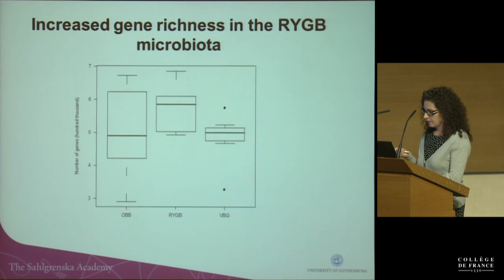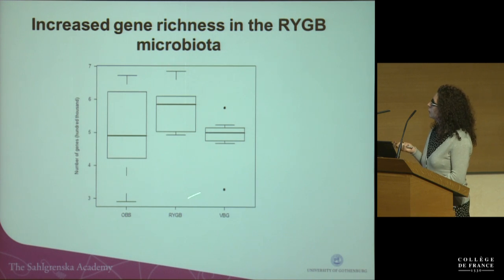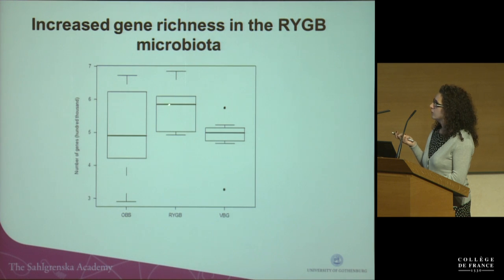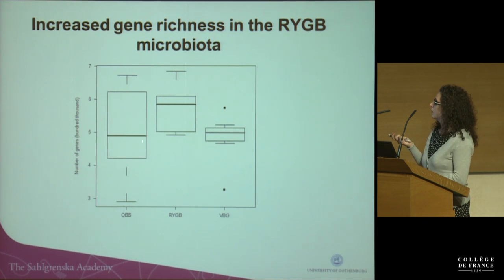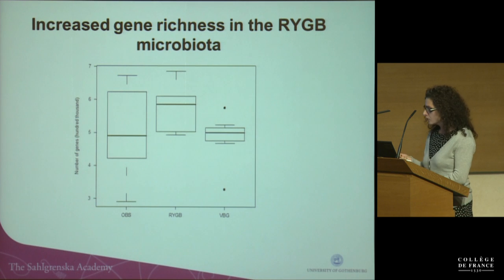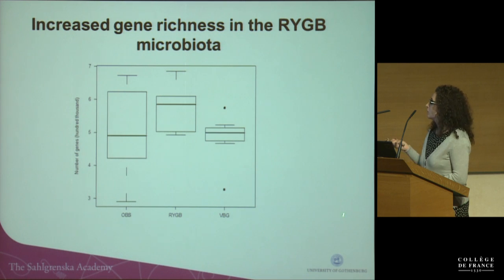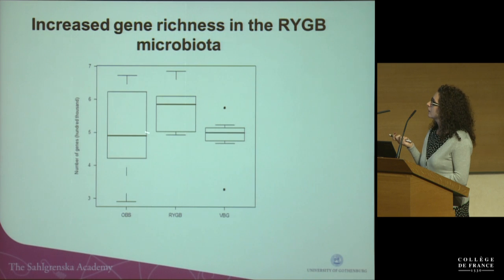In contrast, Roux-en-Y microbes were mostly using sugars, short-chain fatty acids, and phosphoglycerate for energy. Another difference was gene richness: all subjects in the Roux-en-Y group were above the recently established high gene count threshold, while VBG subjects were around the threshold. Although this is only seven subjects per group, this could indicate a more beneficial gut environment in Roux-en-Y gastric bypass than in VBG.